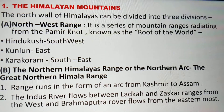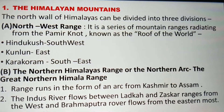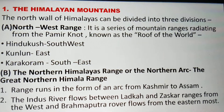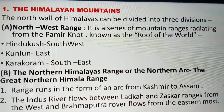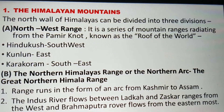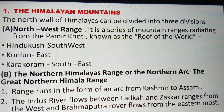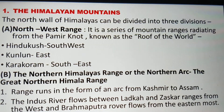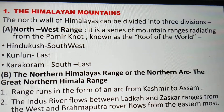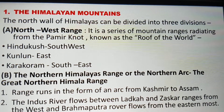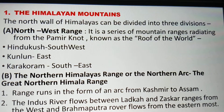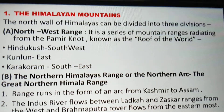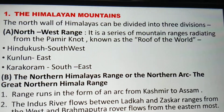We are going to talk about the Himalayan mountains. The north wall of Himalayas can be divided into three divisions. In today's video we will cover two divisions. First is the north-west range — a series of mountain ranges radiating from the Pamir Knot, also known as the roof of the world, which is a chain of mountains ranging from the Pamir Knot.